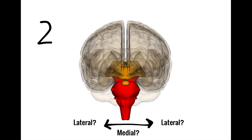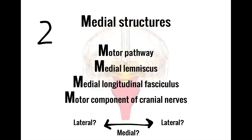To answer the second question — whether the lesion is more medial or lateral — it's helpful to think about which structures are found medially in the brainstem. There are four main medial structures, and they all begin with the letter M: the motor pathway going to the body, the medial lemniscus carrying fine touch, vibration, and proprioception, the medial longitudinal fasciculus that controls eye movements, and the motor component of some cranial nerves including the three nerves controlling eye movements and the hypoglossal nerve controlling the tongue.